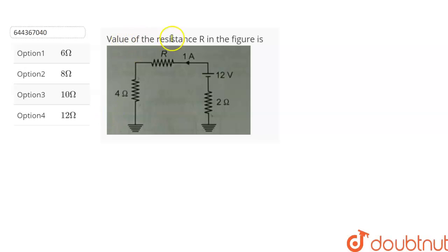The question is: the value of resistance R in the figure is, and we are given four options from which we have to choose the correct option. Let's find out.